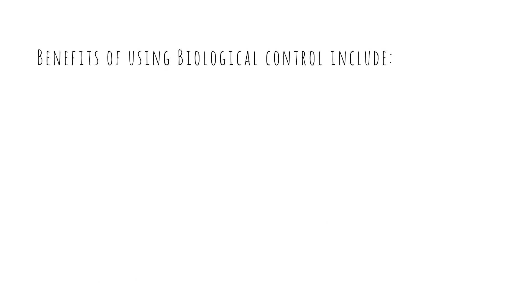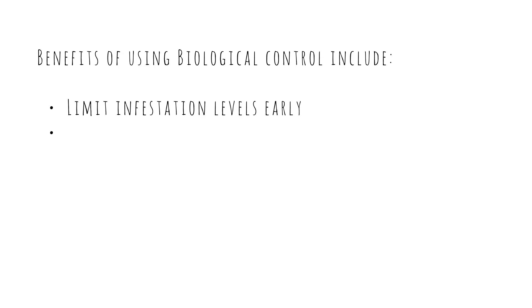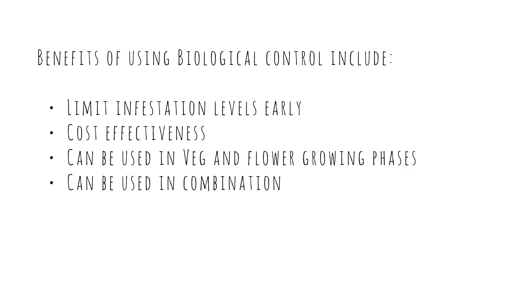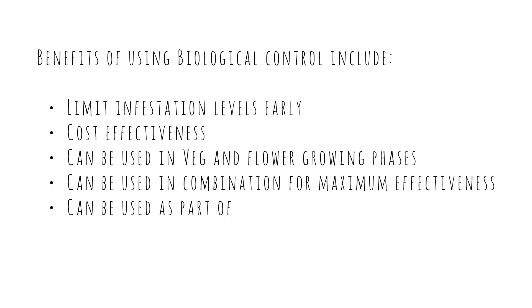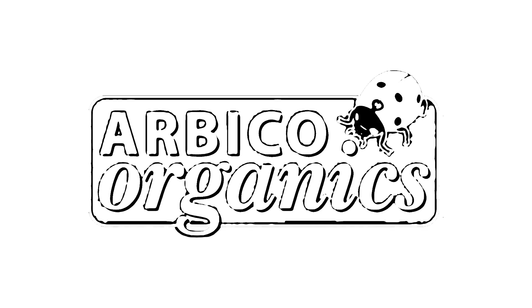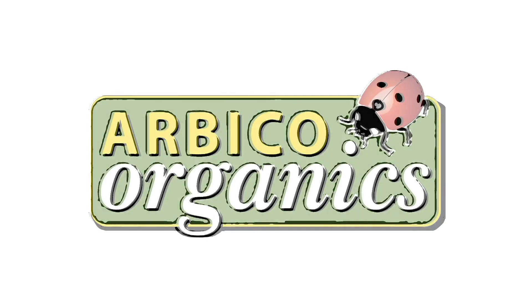Benefits of using biological control include: limiting infestation levels early, cost effectiveness, and the ability to be used in both veg and flower growing phases. These methods can be used in combination for maximum effectiveness and as part of organic practices. Find these and all your cannabis pest insect solutions at Arbico Organics.